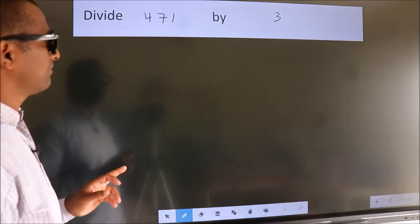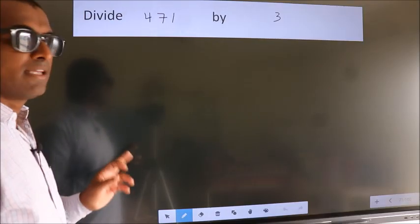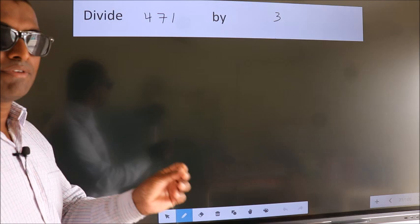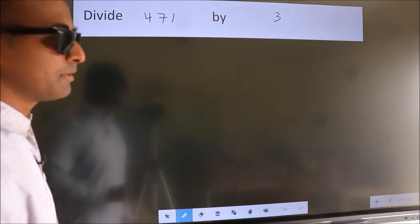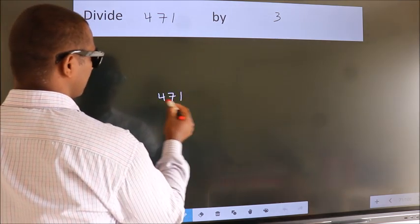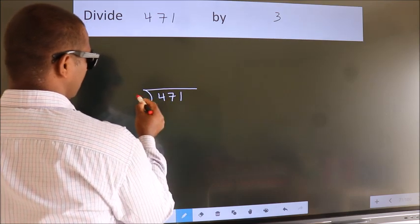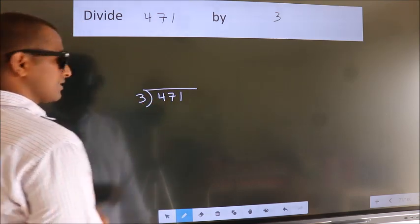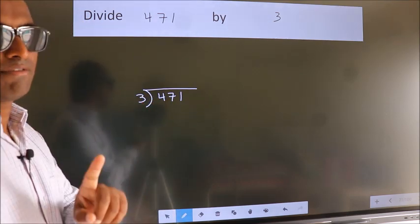Divide 471 by 3. To do this division, we should frame it in this way. 471 here, 3 here. This is your step 1.